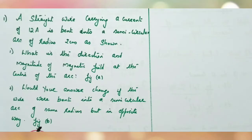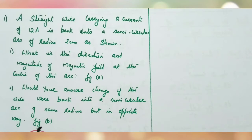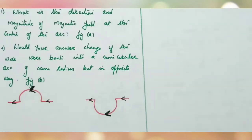A straight wire carrying a current of 12 Ampere is bent into a semicircular arc of radius 2 centimeter. What is the direction and magnitude of magnetic field at the center of the arc in figure 1? Would your answer change if the wire were bent into a semicircular arc of the same radius but in the opposite way as in figure B? Two figures are also given. This is an NCERT question as well as a board question.